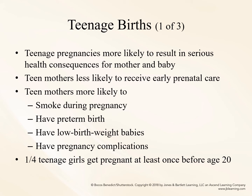Teenage pregnancies are more likely to result in serious health consequences for both the mother and the baby. Teen mothers are less likely to receive early prenatal care, and are more likely to smoke during pregnancy, have preterm birth, have low birth weight babies, and have pregnancy complications. One quarter — 25% — of teenage girls get pregnant at least once before age 20. Teen mothers are typically less educated, less likely to be independent, and less likely to be able to afford the medical care they need.